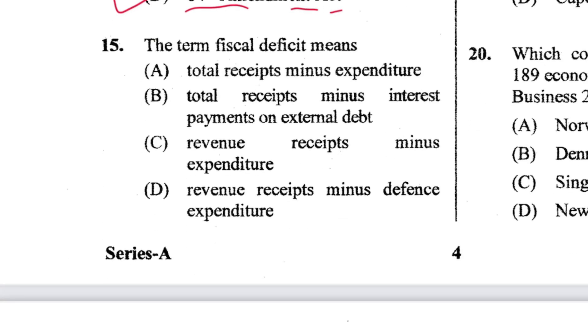Question 15: The term 'fiscal deficit' means total receipts minus expenditure. A is the answer.